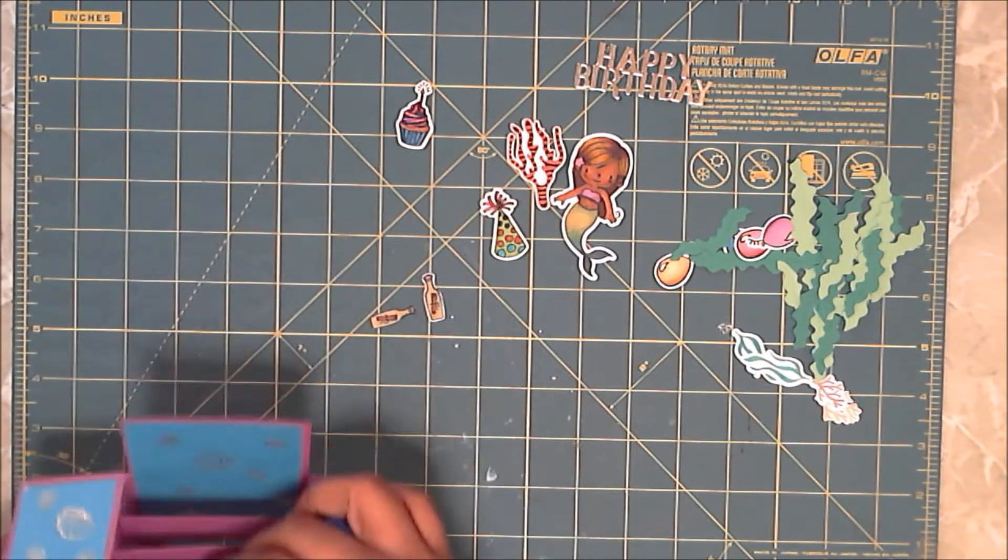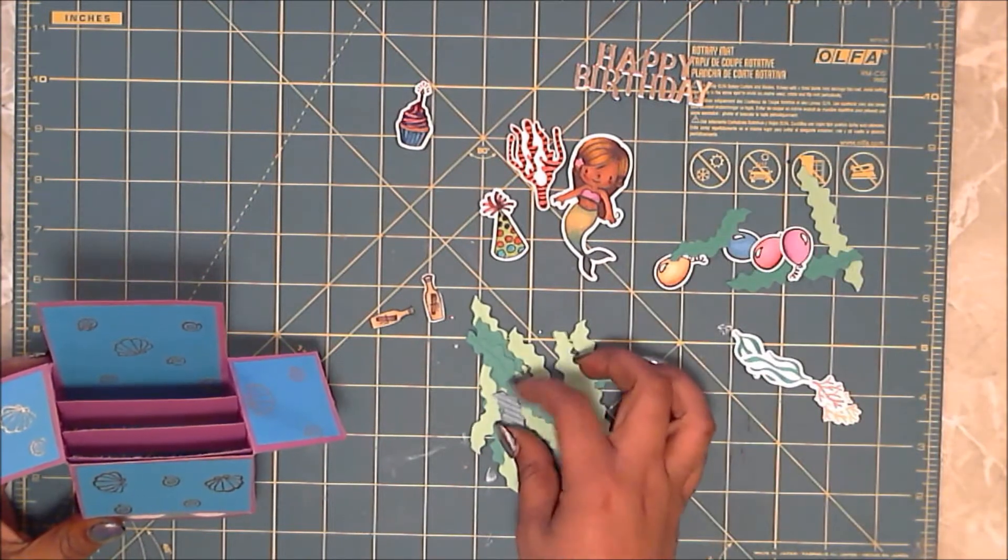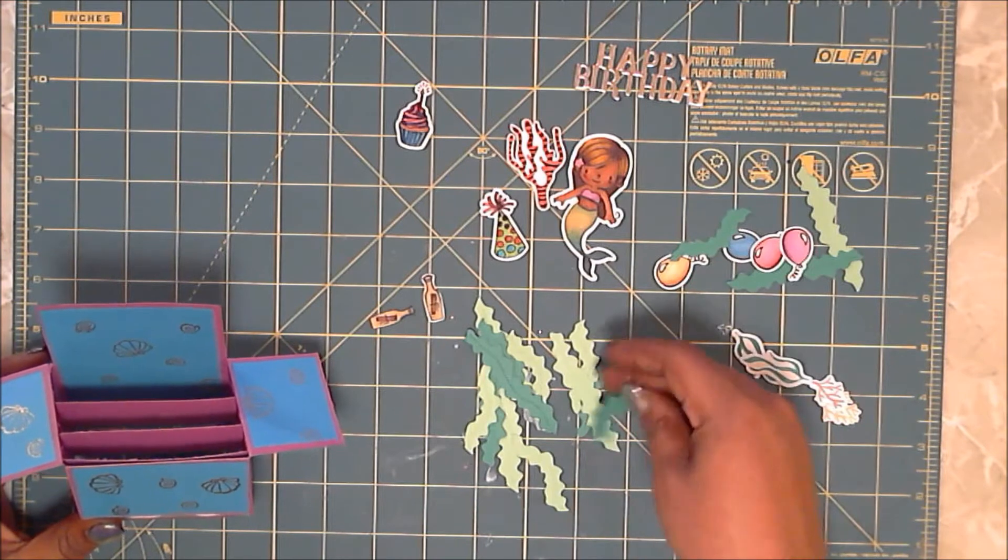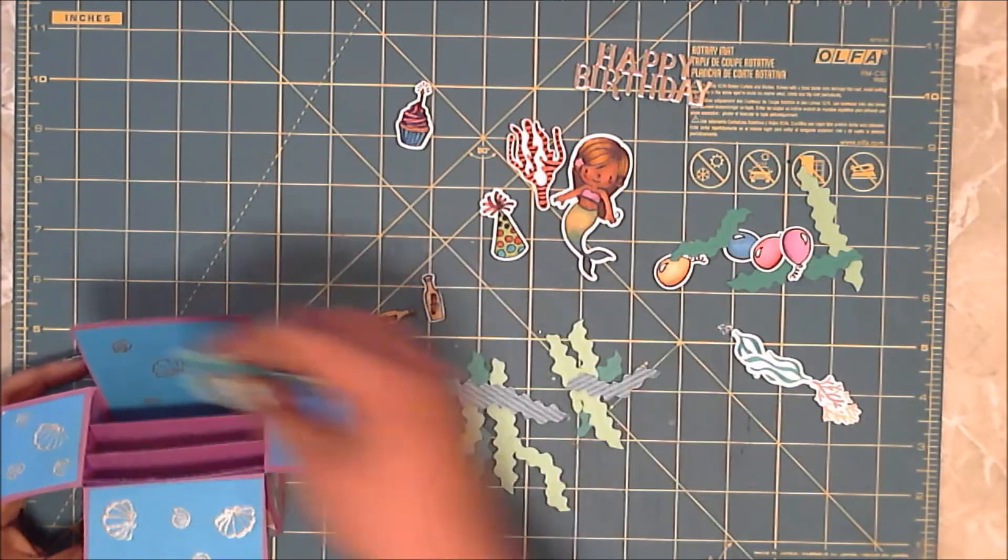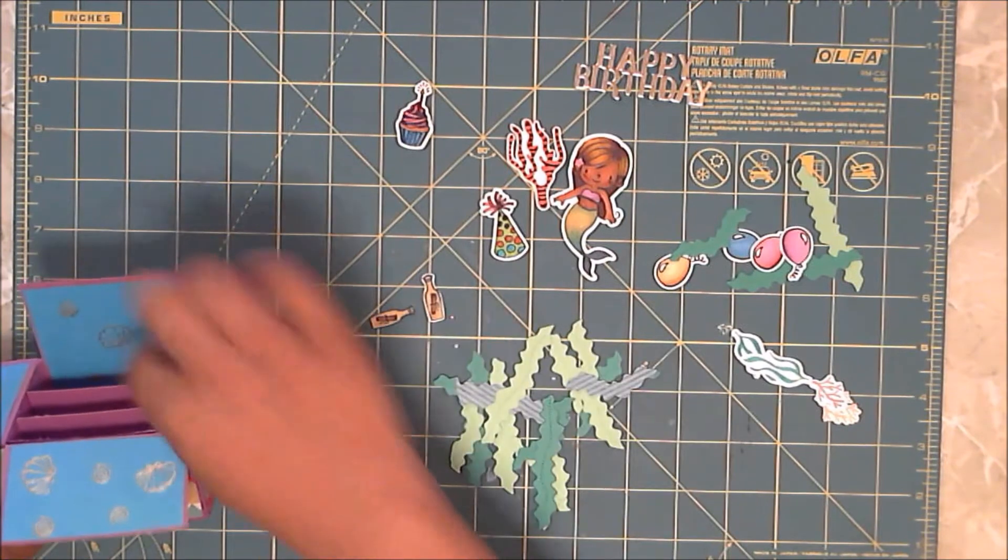So to start this off, I'm going to be taking all of my little pieces of seagrass and seaweed, I guess you can call it, and gluing it on the inside of the back of the box.